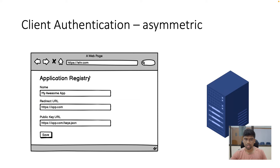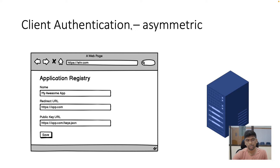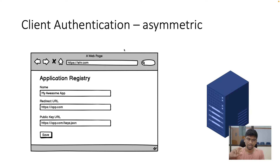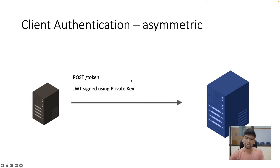The other flow is the asymmetric flow. This is where the JWT mentioned in the discovery endpoint comes in. You register the application similarly — providing the app name, redirect URL if required, and the FHIR resources you need access to. But instead of receiving a client secret, you are asked to provide a public key or a public key URL. There is no shared secret in this case, which is why it's called asymmetric.